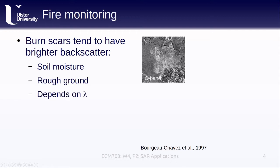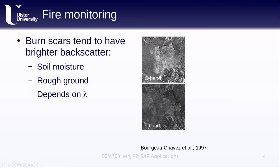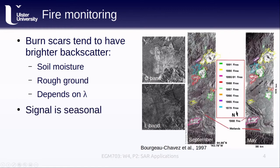This depends on the wavelength of the sensor though. For example, this image is a C-band radar image. If we look at the same area with an L-band sensor, then we no longer see the enhanced backscatter of the burn scar that we see with the C-band. This signal is also seasonal. Depending on the time of year, the backscatter will be more or less enhanced, as shown in this comparison of an image from May and from September 1992.